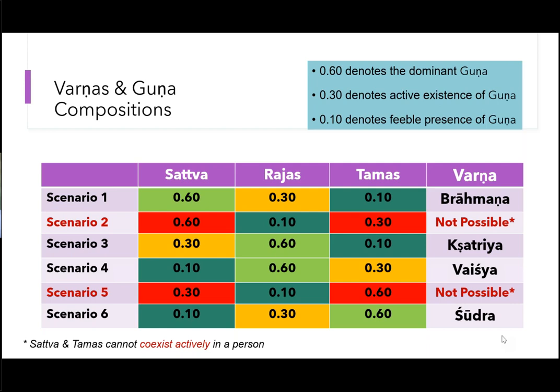Third scenario is possible because there is contiguity between 30 and 60. Shankaracharya clearly said that in Kshatriyas, Rajas is very high and it pushes Sattva a little down — that's what is happening in scenario 3. Scenario 4 is again Shankaracharya's definition: Rajas is very high, it pushes Tamas a little bit down, so by logic Sattva is very little.